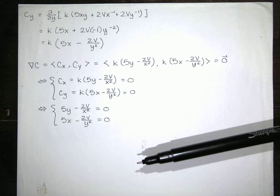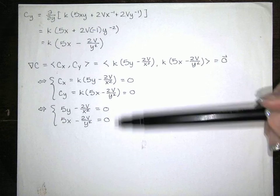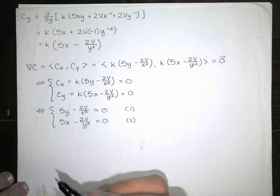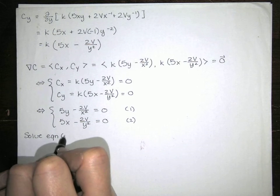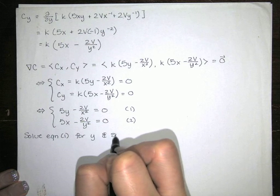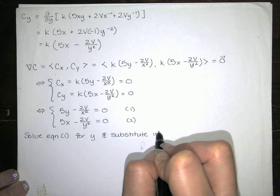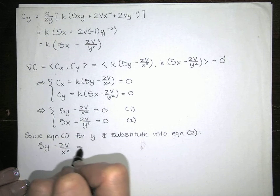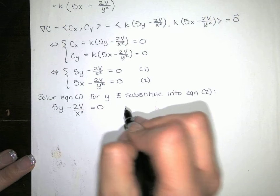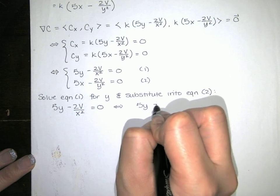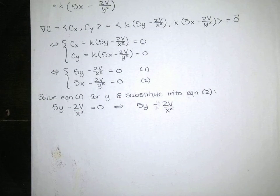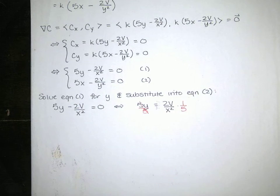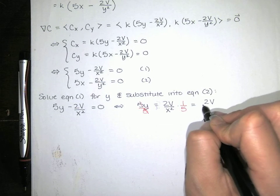The best approach is substitution. I'll solve the first equation for y and substitute into the second. From 5y minus 2v over x squared equals zero, we add 2v over x squared to both sides and divide by 5, giving y equals 2v over 5x squared.